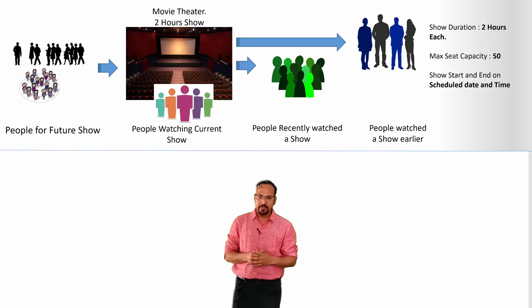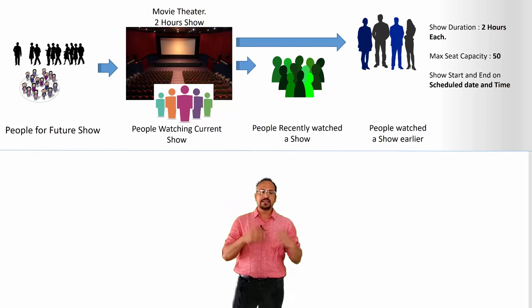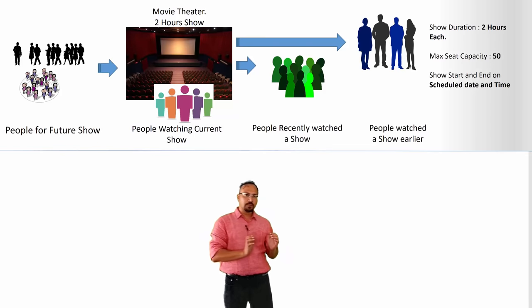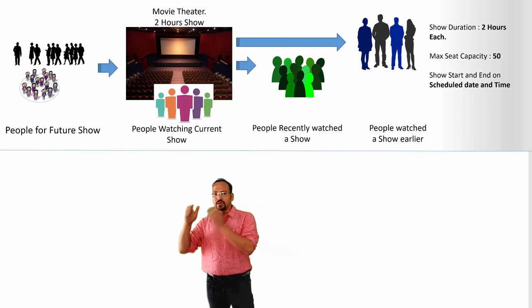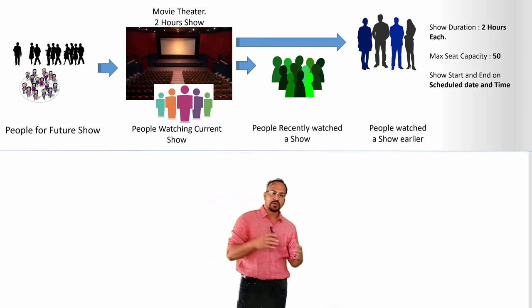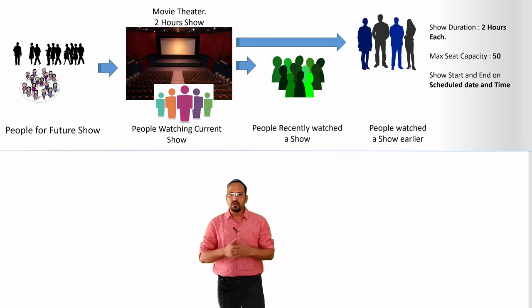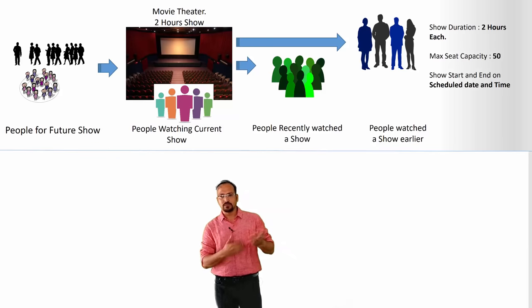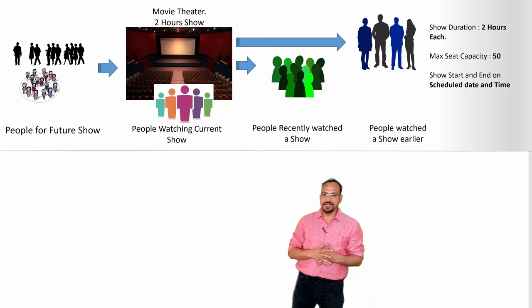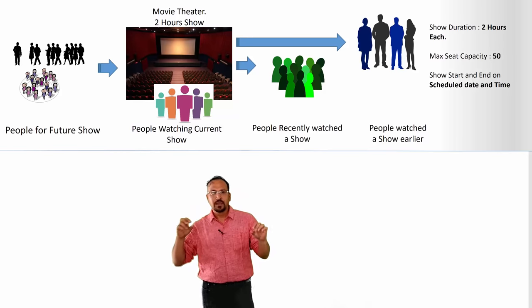Here's a real-life example. Assume we have a movie theater where people are lined up for a future show — already allocated into groups for the evening show and matinee show. At any given time, a group goes in and comes out once the show ends. The show duration is two hours, the max seat capacity is 50, and there is a defined start and end time for the show. That is the first scenario.